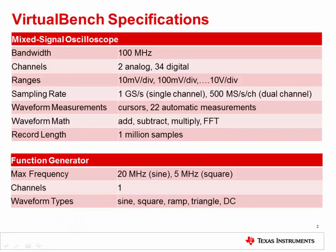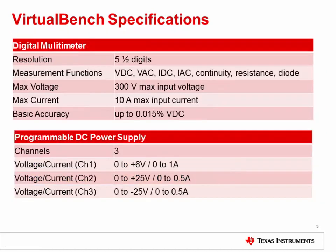I won't go into detail on all of the Virtual Bench specifications, but they are given here. Some key specs to note are the 100 megahertz oscilloscope bandwidth, up to 1 gigasample per second sampling rate, and up to 20 megahertz sinusoidal function generator.